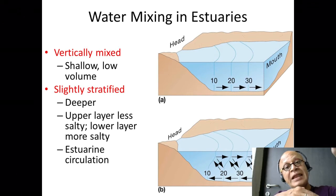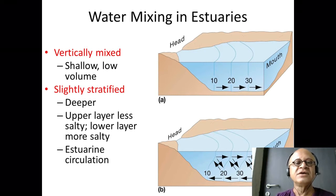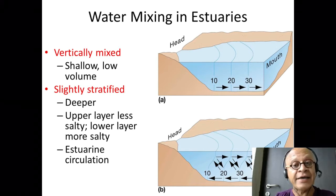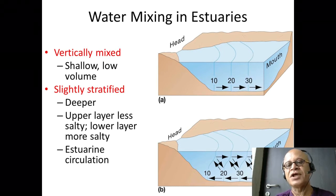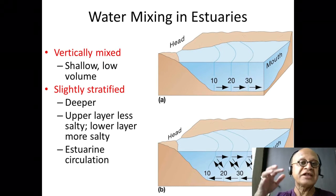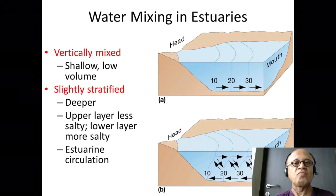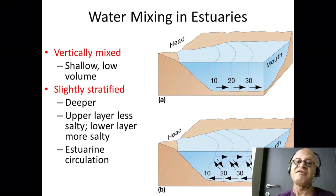The fresher water coming from land tends to flow out at the top. When the estuary is fairly shallow and the fresh water flow is not that high, winds are able to mix it up and the density contrast is not so strong, so you end up with a vertically mixed estuary. The salinity is fairly well mixed down to the bottom — 10, 20, 30 parts per thousand — to the mouth where it becomes normal ocean water, which is usually around 34 to 35 parts per thousand.